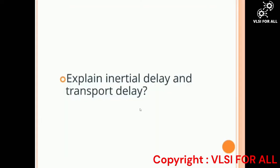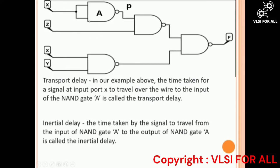Our third question is: explain inertial delay and transport delay. In this example, x, y, and z are inputs, a is a NAND gate, p is the output of the NAND gate, and f is the overall output. The time taken for a signal at input port x to travel over the wire to the input of the NAND gate is called the transport delay. The time taken by a signal to travel from the input of the NAND gate to the output (p) is called the inertial delay.